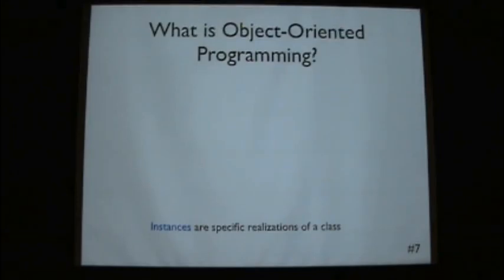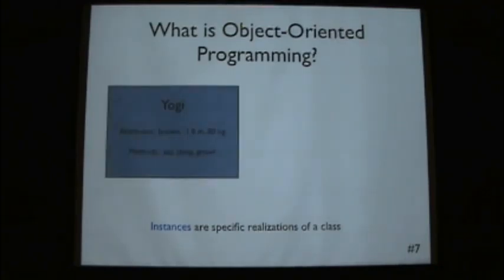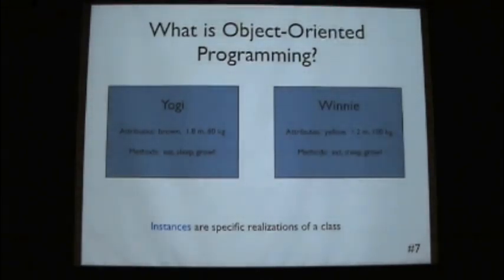We can also create instances which are realizations of a class. So if our class is bear, we could make an instance which is Yogi. And Yogi could have some specific attributes and some specific methods. We could also create another instance of the bear class called Winnie. Winnie's maybe a little shorter, but for some reason heavier. I don't know if I believe that.